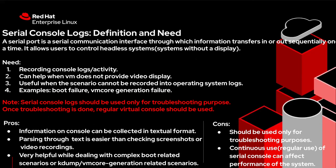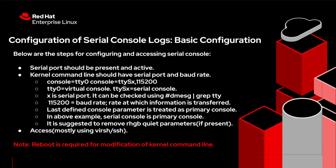Now let's see the configuration of serial console logs. The basic configuration requires the presence of an active serial port, and the serial port and baud rate on the kernel command line. If the 'rgb' and 'quiet' parameters are present on the kernel command line, they should be removed temporarily because they can hide a lot of information on the console.